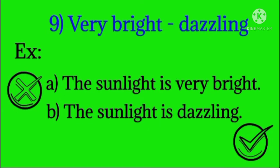9. Very bright. Instead of very bright, you can say dazzling. Example: The sunlight is very bright. The sunlight is dazzling.